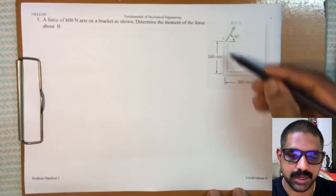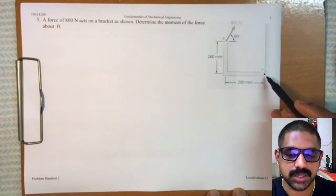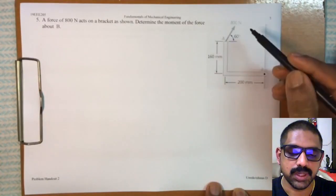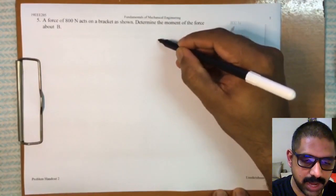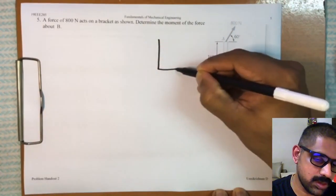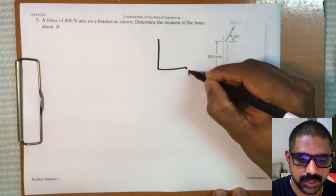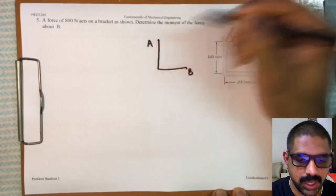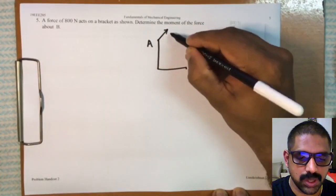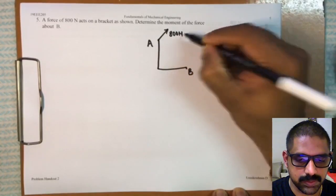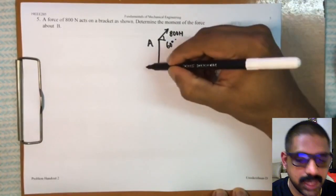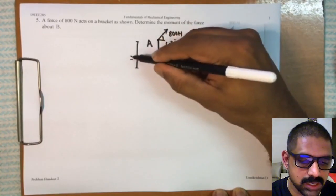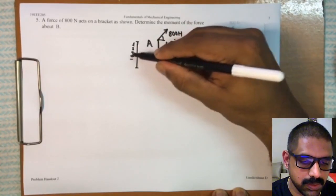There is a force of 800 Newton acting on this bracket AB. The point B is hinged onto the wall. To solve this, we create the free body diagram of the bracket. In the free body diagram, point B is here and point A is here, with a force of 800 Newton acting at an angle of 60 degrees.